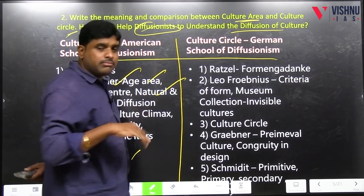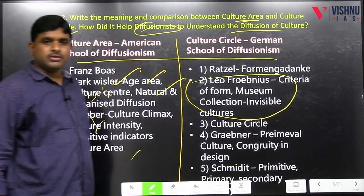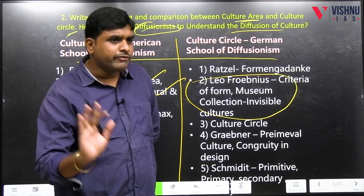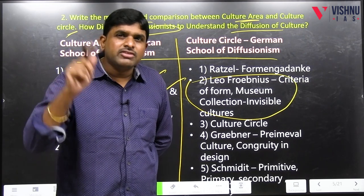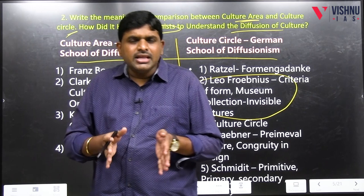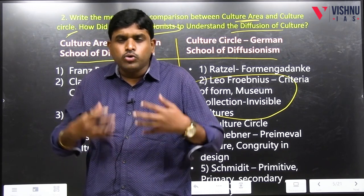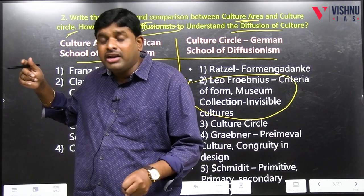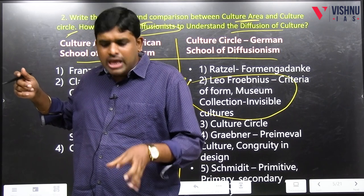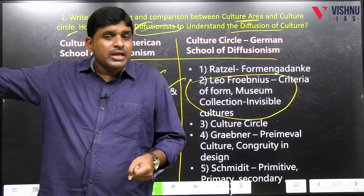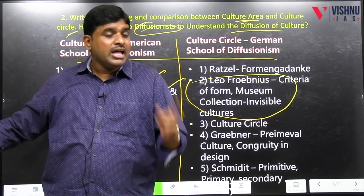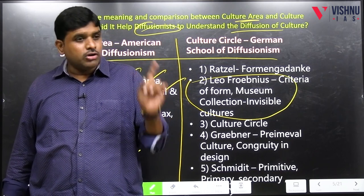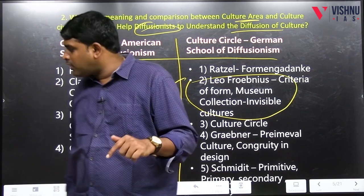Leofrebenius — if I am allowed to make a question for UPSC, I will ask this question. Leofrebenius discussed criteria of form and criteria of quantity: more the number of similar terms, more the diffusion. He studied the Malio-Nigritic culture and West African culture, and told that today's culture is because of some invisible culture — in history, somewhere the diffusion happened. To find where, we have to study museum collections. If the museum elements here and there are the same, we can conclude that diffusion happened once. Those are called invisible cultures — this is also called museum methodology.